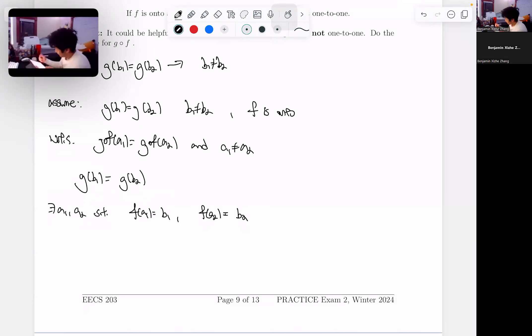We also know from our assumption that b1 does not equal b2, so it must also be true that f of a1 does not equal f of a2. And what does this tell us? This tells us that a1 does not equal a2.